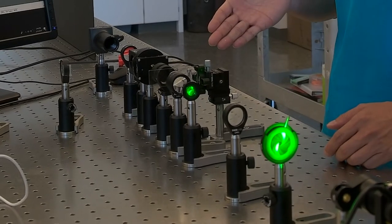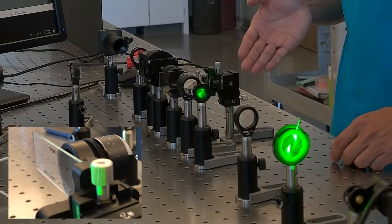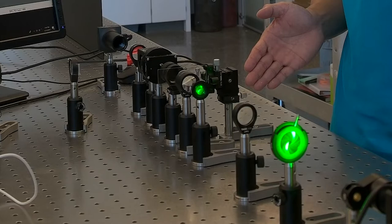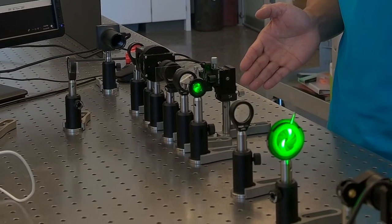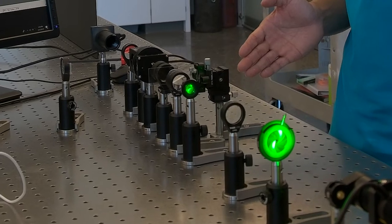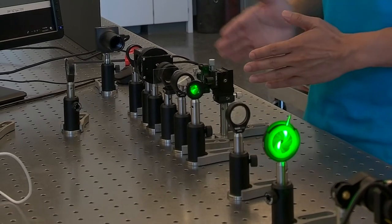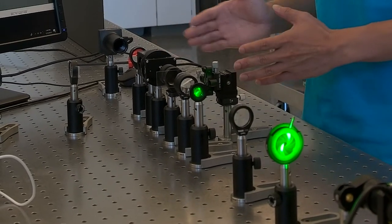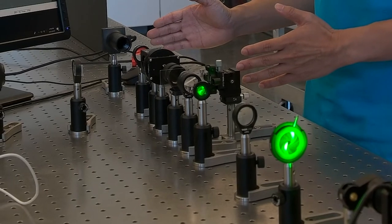This is where the sample is, and this is the sample holder. To the left of the sample, this is set up as the illumination part, to illuminate the sample homogeneously. And to the right of the sample, this is built as an imaging part.